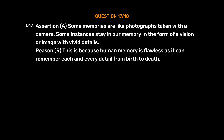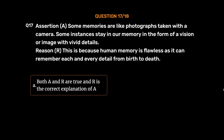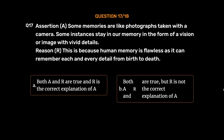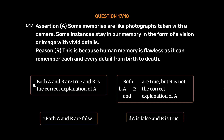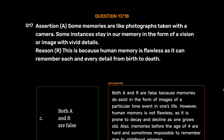Question number 17. Assertion A: Some memories are like photographs taken with a camera; some instances stay in memory in the form of a vision or image with vivid details. Reason R: This is because human memory is flawless as it can remember each and every detail from birth to death. Option A: Both A and R are true and R is the correct explanation of A. Option C: Both A and R are false. Option D: A is false and R is true. The correct answer is Option C, Both A and R are false. Memories do exist in the form of images, but human memory is not flawless — it is prone to decay, and memories before age four are hard to remember due to childhood amnesia.